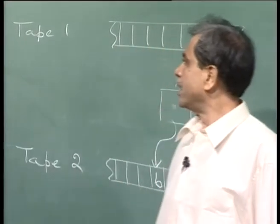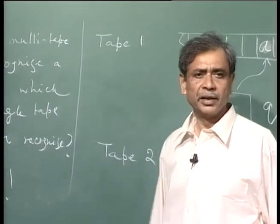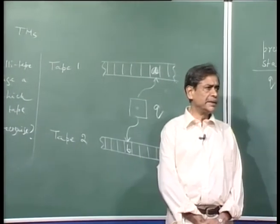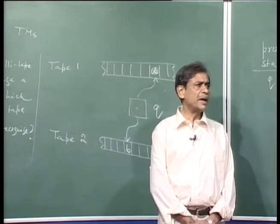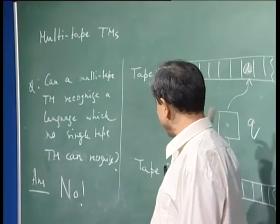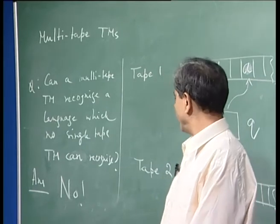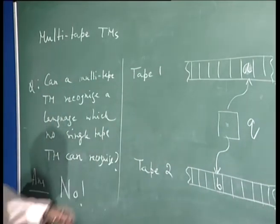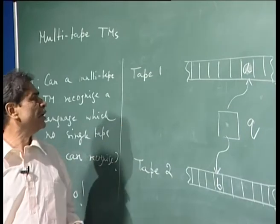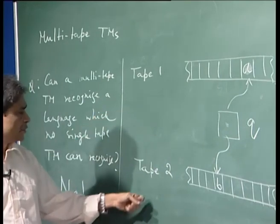We are asking the question: can a multi-tape Turing machine recognize a language which no single-tape Turing machine can recognize? We would like to show the answer is no. This means that if there is a language recognized by a multi-tape Turing machine, that same language can also be recognized by a single-tape basic Turing machine. We will illustrate this proof by means of an example with two tapes, and the same idea carries over to multi-tape machines with more than two tapes.